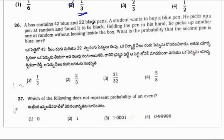Next question: A box contains 42 blue and 22 black pens. A student wants to buy a blue pen. He picks up a pen at random and found it to be black. So 42 blue, 22 black pens. One pen is taken at random and it's black. Holding the pen in his hand, he picks up another one at random without looking inside the box. What is the probability that the second pen is blue?